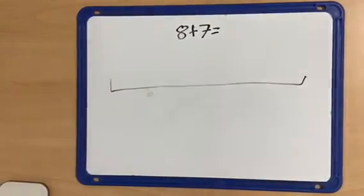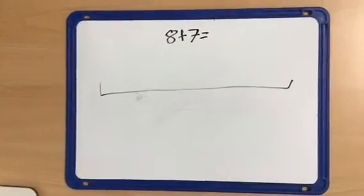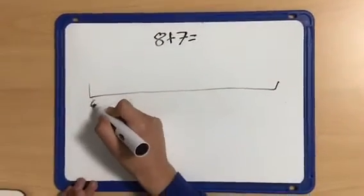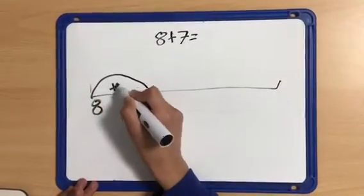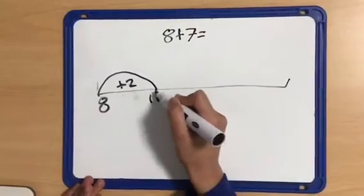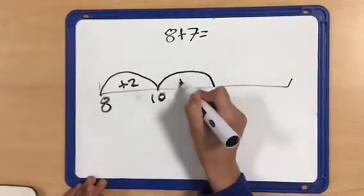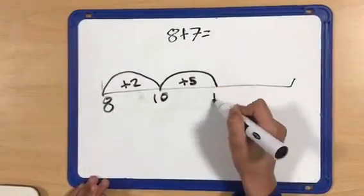The idea is to make numbers easier to work with. If I add 2 to 8, I get 10. If I add the rest, which is 5, I get 15.